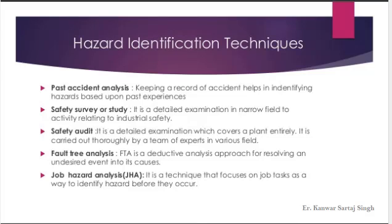How can we identify these hazards? First is past accident analysis — keeping a record of accidents helps in identifying hazards based on past experiences. Second is safety survey. Third is safety audit. Fourth is fault tree analysis, which is a directive analysis approach for resolving an undesired event into its causes. Last is job hazard analysis, a technique that focuses on job tasks as a way to identify hazards before they occur, since hazards must be identified before any accidents take place.